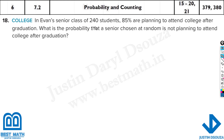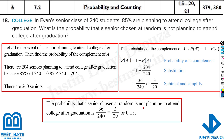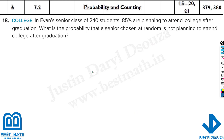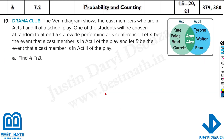In a senior class of 240 students, 85% are planning to attend college after graduation. What is the probability that a senior chosen at random is not planning to attend college? I'm not going to solve anything complicated here because directly we can tell it's 15%. Why? Because 85% are going to college, so the remaining 15% will not. So the answer is 0.15 or 15% — it's a direct problem.